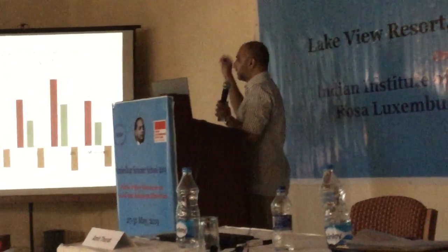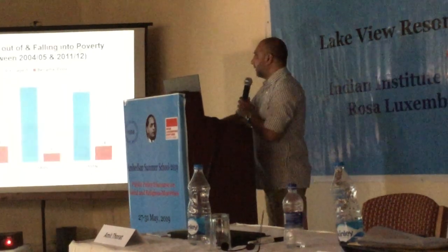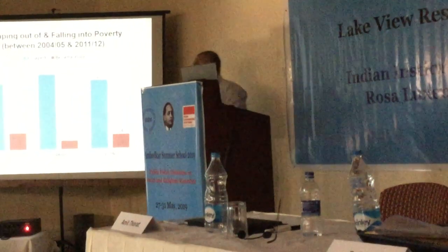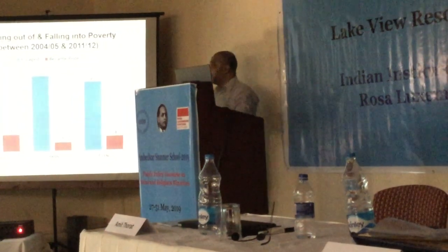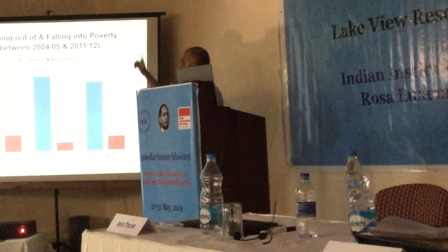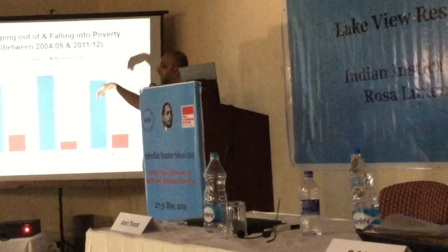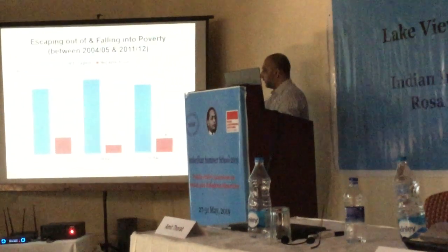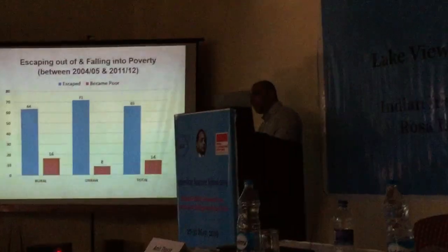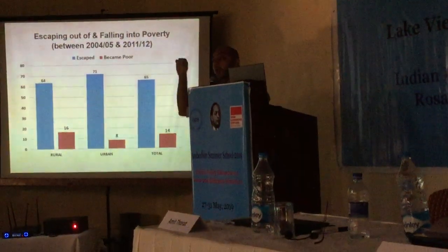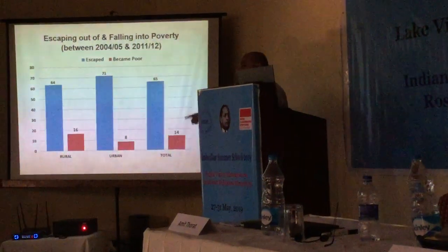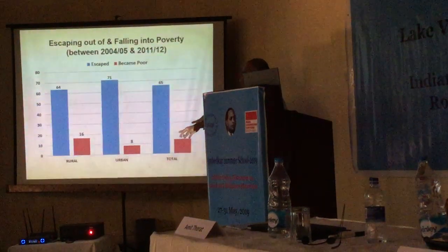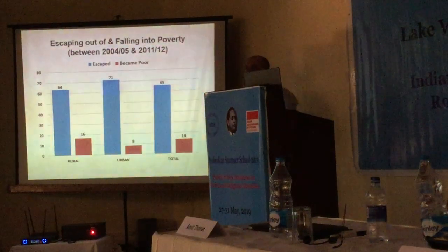Because it is a panel, the IHDS allows you to ask: of the people who were poor in the first round, 2004, how many escaped poverty by 2011? The answer is 64% overall — 71% in urban areas and 64% in rural areas. However, at the same time, people who were not poor have fallen back into poverty — 16% in rural areas, 8% in urban areas, and 14% in aggregate.